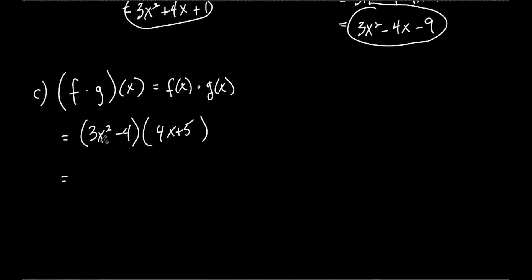So 3x² times 4x, what is that? 12x³. Good. That's the first. Let's do the outside. 3x² times 5, plus 15x². Inside, these two right here, negative 16x, and then the last, negative 4 times 5, negative 20. Are there any like terms to add here? No. I got cube, squared, x, and a number constant. So that's it.